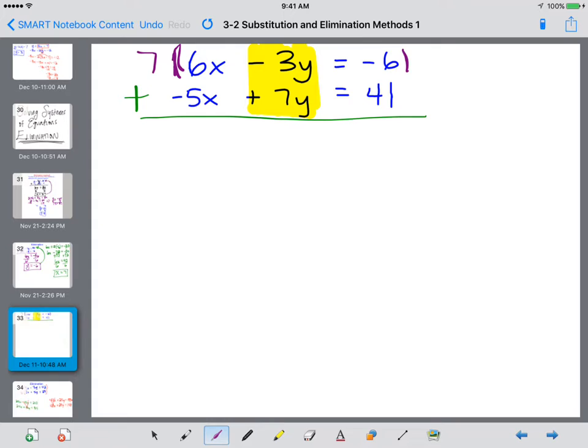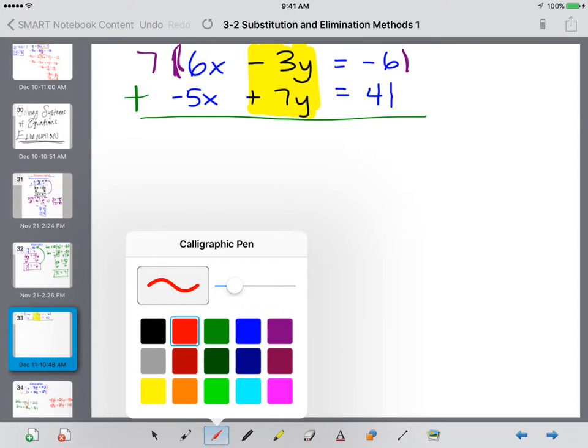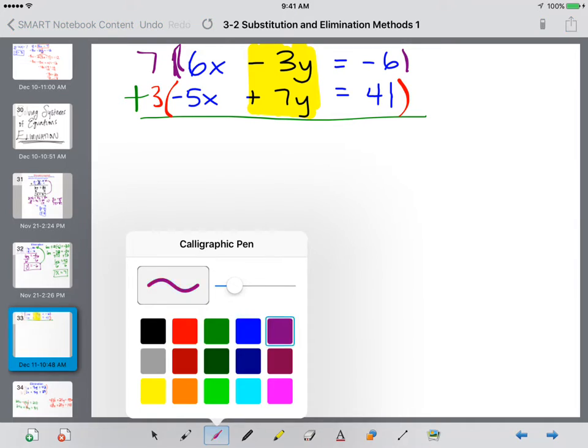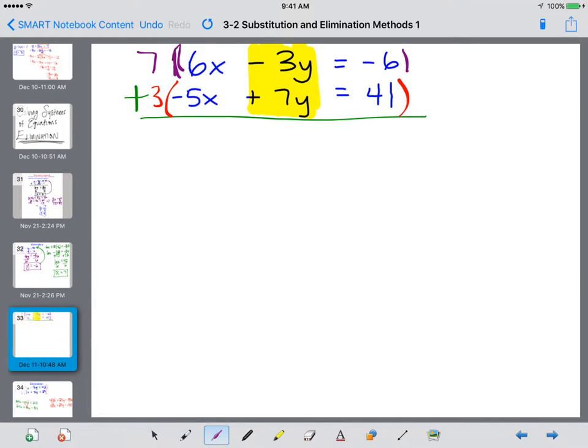So let's multiply the top equation by 7. And if I multiply the bottom equation, I multiply positive 7 by 3, I get positive 21. So I just need to multiply everything to get my y's to line up. So I'm going to distribute the 7 to all three terms, to where I'm going to get 42x, 7 times negative 3 is a negative 21y, 7 times negative 6 is negative 42.